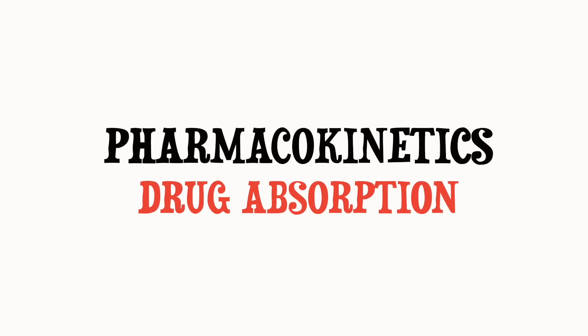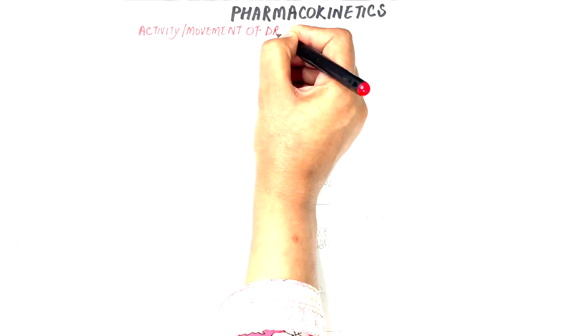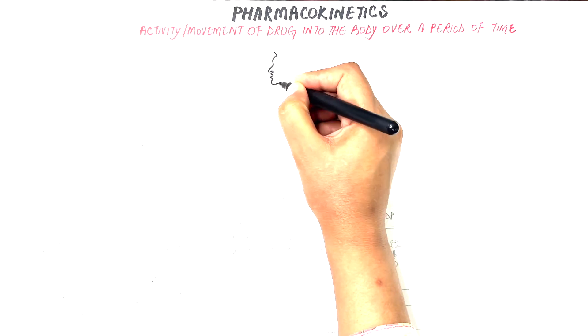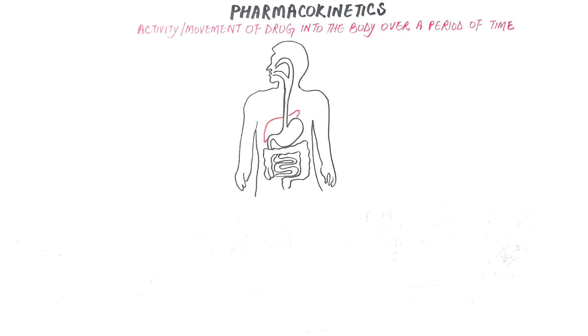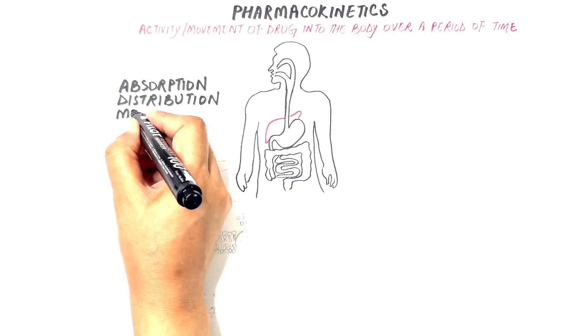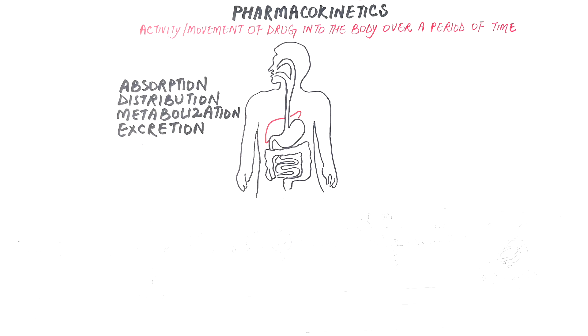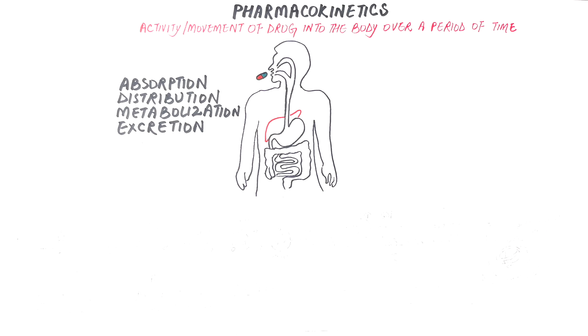So in today's video, we'll look into pharmacokinetics. Pharmacokinetics is the activity or movement of drugs into the body over a period of time. It includes the processes by which drugs are absorbed, distributed, metabolized, and then excreted by the body either through the feces or urine. In short, all those processes that the drug undergoes once it enters into the body is termed pharmacokinetics.